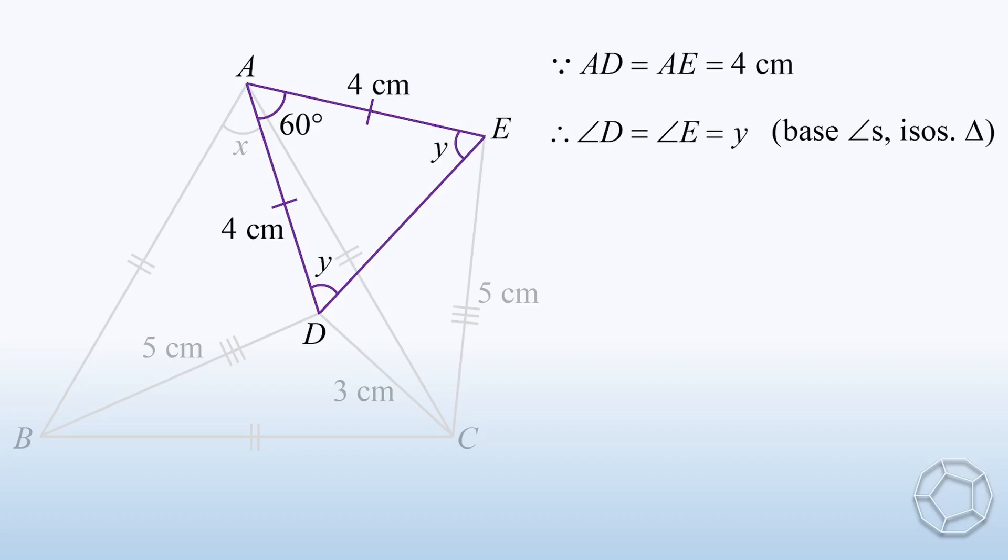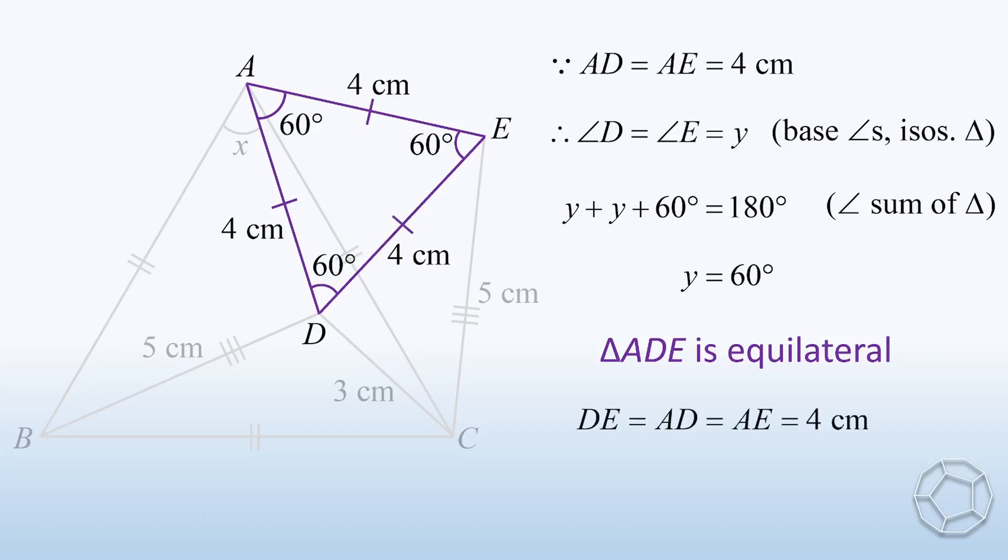We can solve the value of y easily by angle sum of triangle. So y is equal to 60 degrees. Because all the three angles are equal, so the purple triangle is also equilateral. Therefore, the side DE is equal to 4 cm.